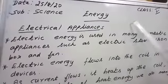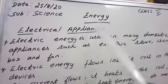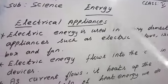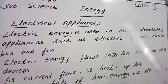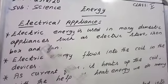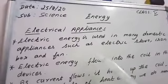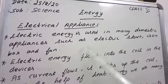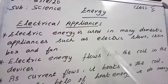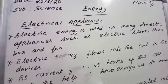So then, electric appliances. How is the energy used in electrical appliances? Appliances means the things that we are using in our home. Electric energy is used in many domestic appliances. Domestic means we are using it at home. Such as a mixing grinder, fridge, refrigerator, iron box, electric stove, and fan.